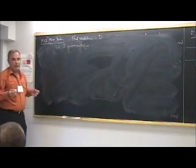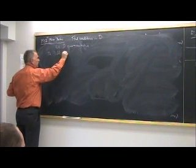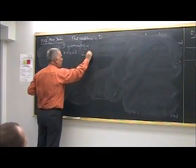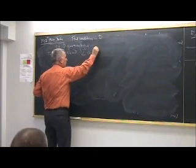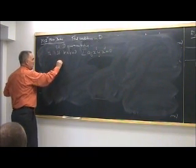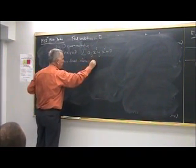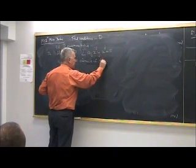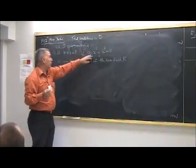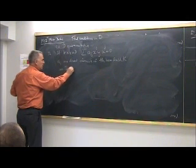And for example, he proved a theorem which is the following: that if for any x and y from D, we have that sum Aij x^i y^j equals zero, where Aij are fixed from the base field, so they don't depend on the pair x and y, then D is commutative.